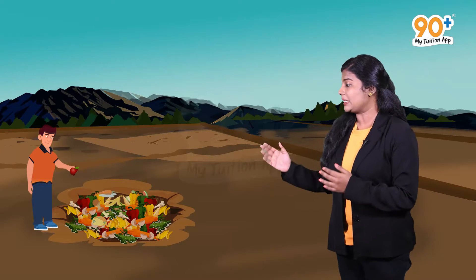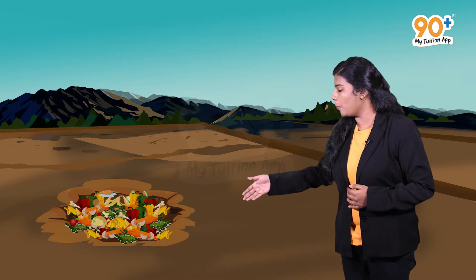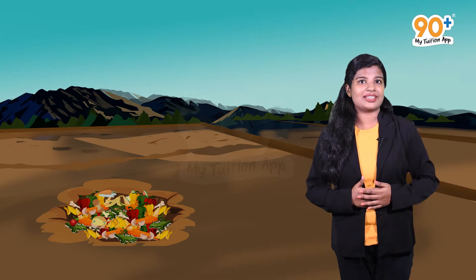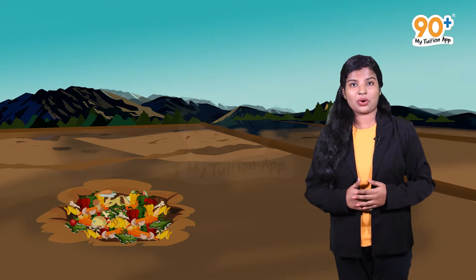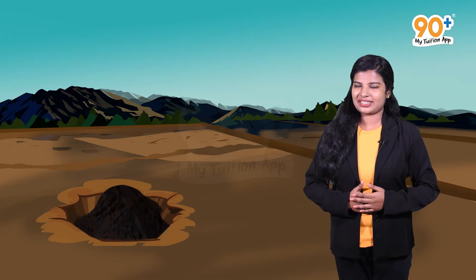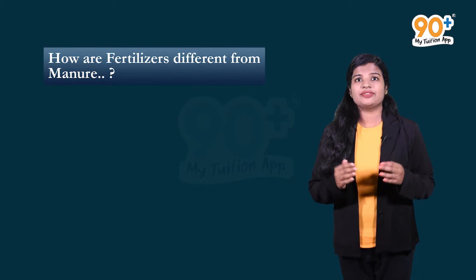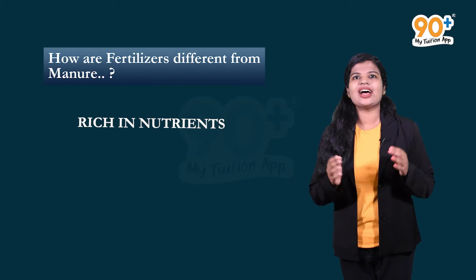Now let's see how manure is prepared. People dump plant and animal waste into an open pit and leave it undisturbed. During this time, microorganisms act on the plant and animal waste and decompose them into manure. How are fertilizers different from manure? Fertilizers are rich in nutrients and are synthesized in industries.